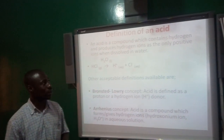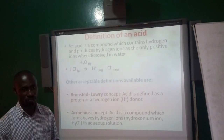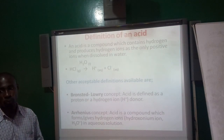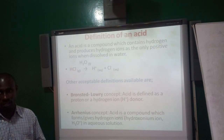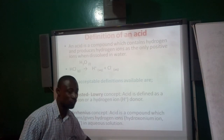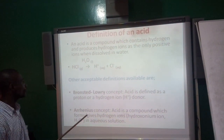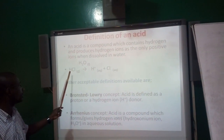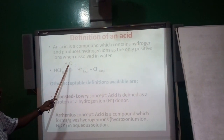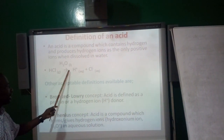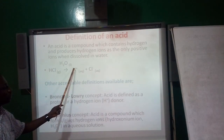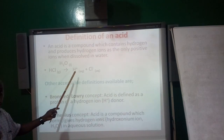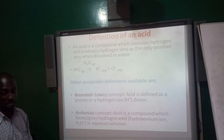An acid is a compound which contains hydrogen, and it produces hydrogen ions as the only positive ions when dissolved in water. If we look at the chemical equation here, on the left is that of HCl, that is the hydrochloric acid. When it is dissolved in water, it produces the hydrogen ions and also the other anion, which is the chlorine. But the hydrogen ion here is the only positive ion, and that is making it to be an acid.